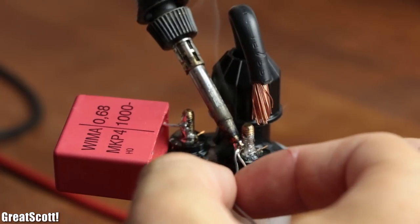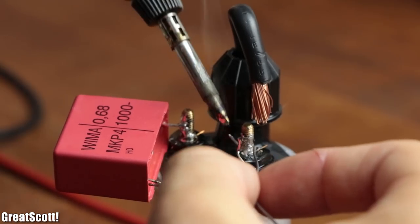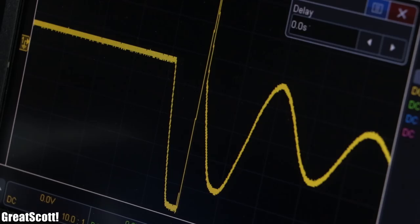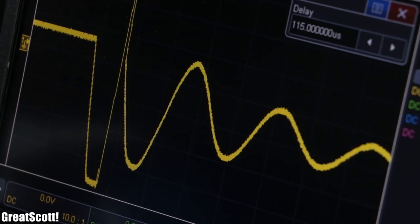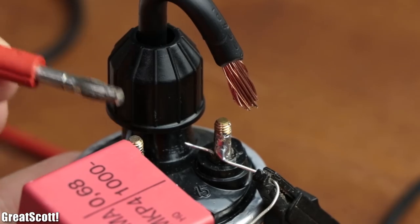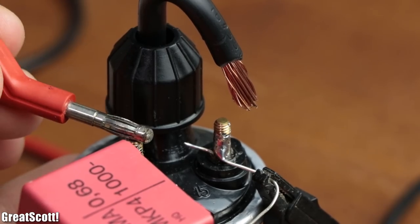To fix that, I added a capacitor in parallel to the primary in order to create a tank circuit which lets energy oscillate a bit longer on the primary side and thus allows for enough energy transfer to the secondary to finally create the spark.